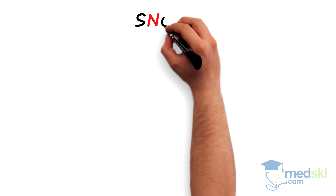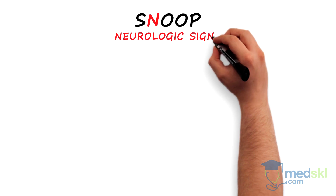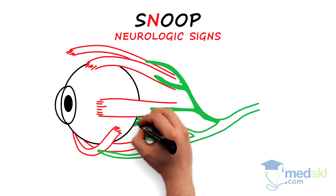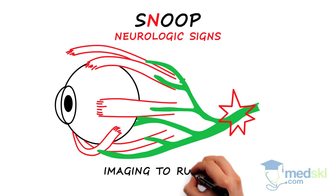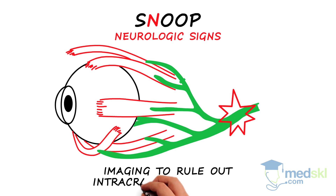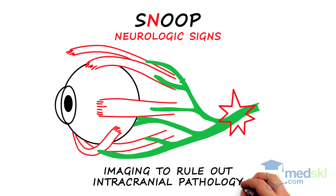N refers to neurologic signs like cranial nerve palsies or paralysis. Imaging needs to be ordered to rule out intracranial pathology.